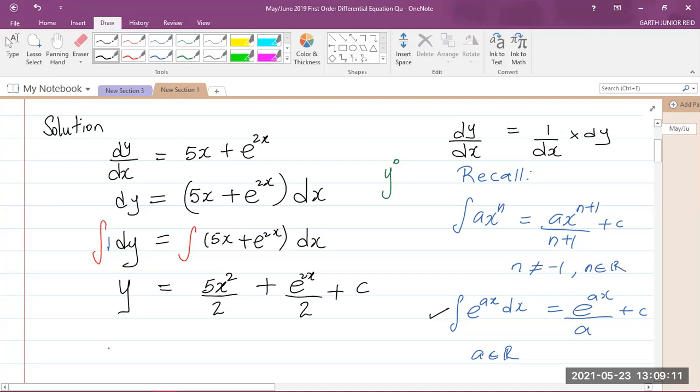Now I recognized that a half is a common factor in both of the terms in the first two terms there. So I can now say that therefore, y is equal to—I can factor the half, and in brackets I will have 5x squared plus e to the power 2x remaining, plus my arbitrary constant of integration c.